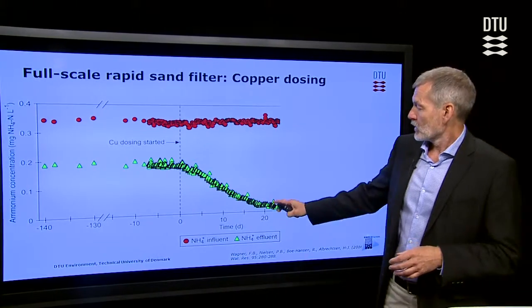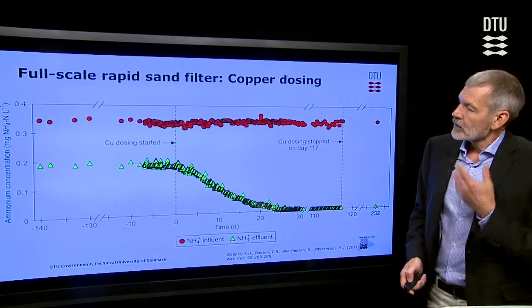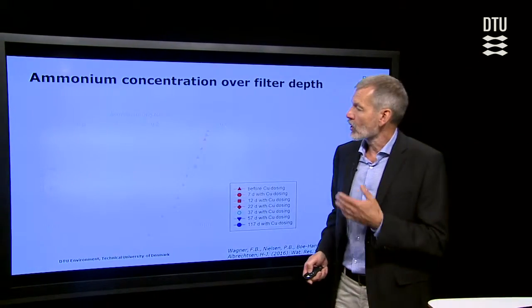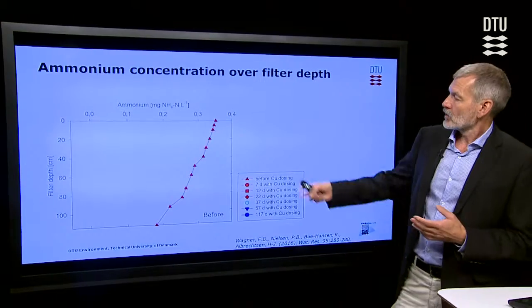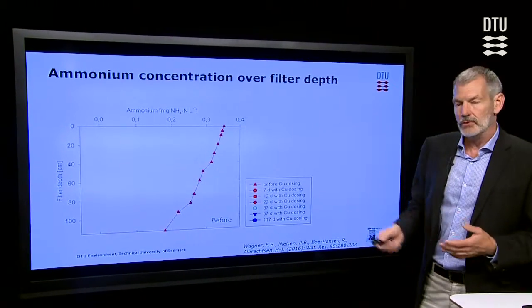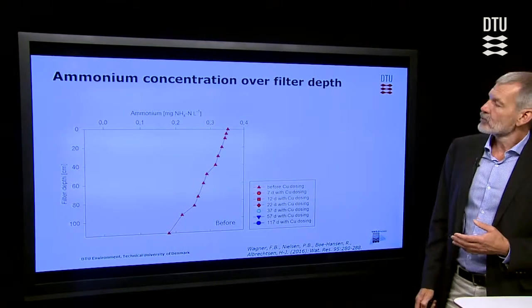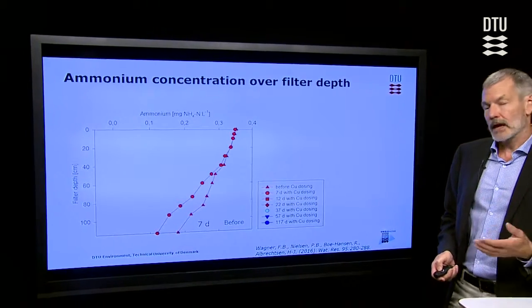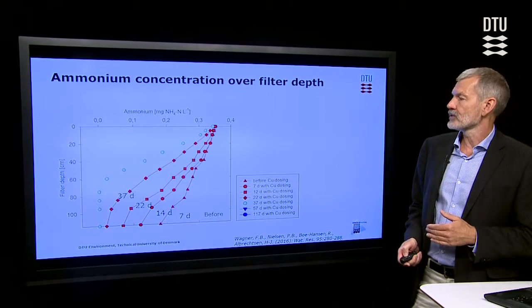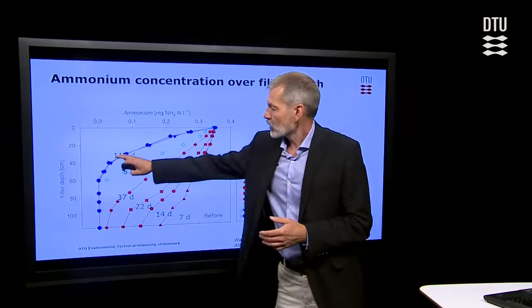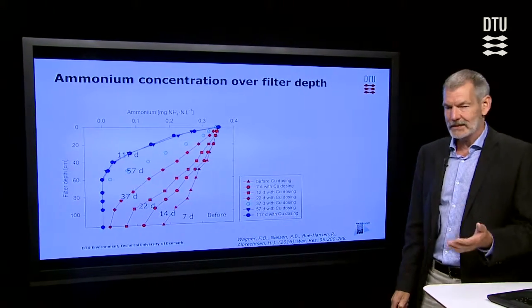After three weeks, the effluent concentration was down to below the threshold and stayed there. Looking further into what was going on in the filter: before adding copper, the ammonia concentration was decreasing all the way down through the filter, and we actually had a breakthrough — ammonia was coming out of the filter. When we started adding copper, the process was stimulated and moved upwards in the filter, so the main part of removal occurred in the upper zone and nothing was coming out. Dosing copper clearly had an effect.